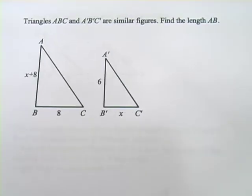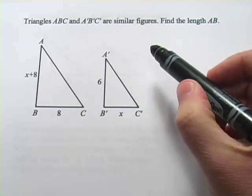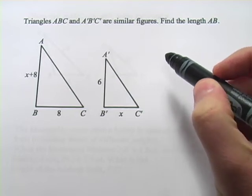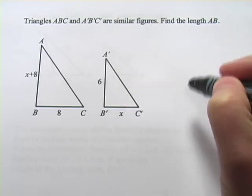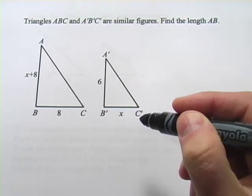This one's a little bit trickier and requires some algebra. It says triangles ABC and A prime B prime C prime are similar figures. Find the length of AB. So they're similar so we know the sides are proportional. We can set up a proportion.